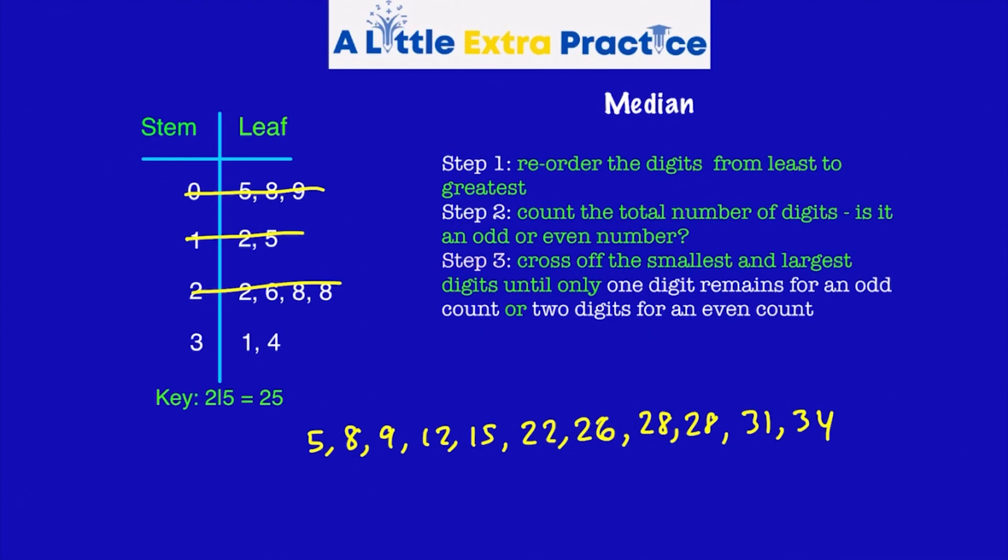How many digits? One, two, three, four, five, six, seven, eight, nine, 10, 11. Okay, so it's 11. So I'm going to look for one digit in the middle. Cross them off. Make your prediction maybe. Which number is it going to be? Looks like it's going to be 22. So 22 is the median for this stem and leaf plot. Half the numbers are greater than 22. The other half are less than 22.